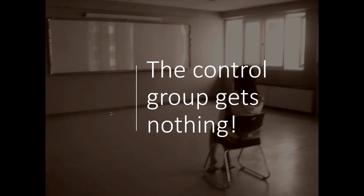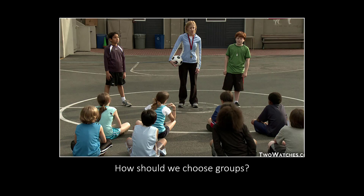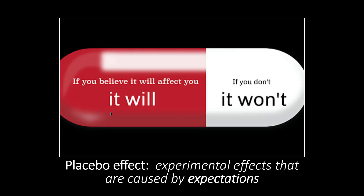Remember though — we had two groups. The experimental group gets the treatment; the control gets nothing. Wait a minute — there's a problem with this. We've introduced a confounding variable. If the experimental group is getting the treatment and the control group is getting nothing, this is a confound. Should the control group really be getting nothing? It creates a different experimental environment and thus is a confound. This is where the importance of the placebo effect comes in. If you believe it will affect you, it will. The placebo effect is the idea that our expectations define our reality.